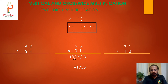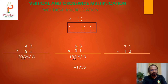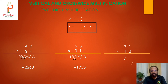Next: 42 times 54. Last column: 2 fours are 8. Middle cross-connect: 4 fours are 16, 5 twos are 10, so 16 plus 10 is 26. First column: 5 fours are 20. Eight stays, 6 stays, 2 plus 0 is 2. The answer is 2268.